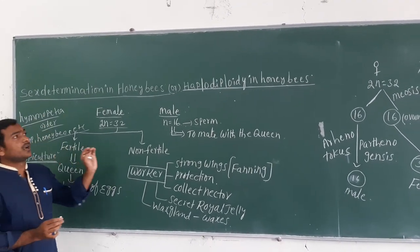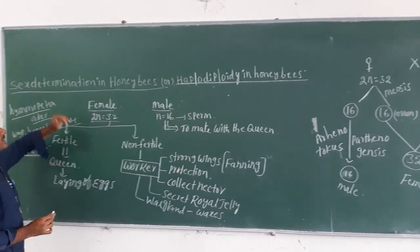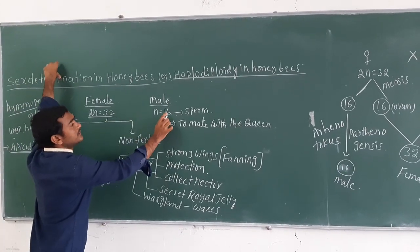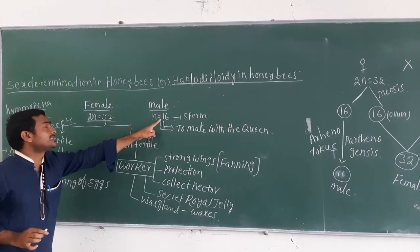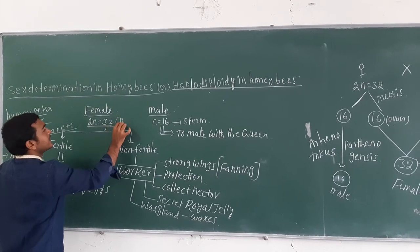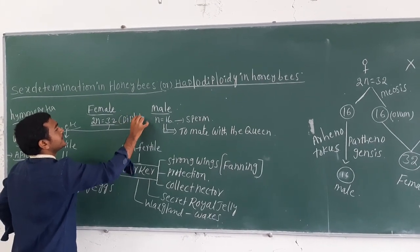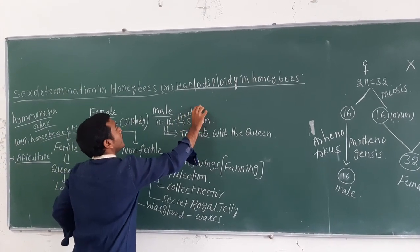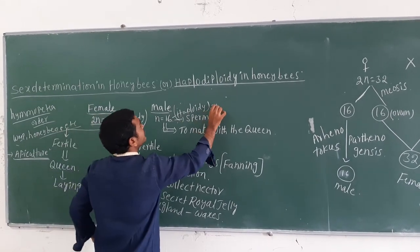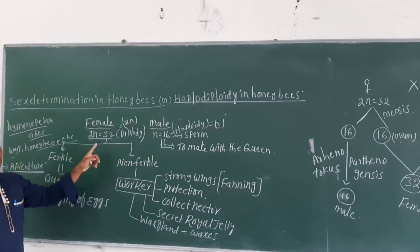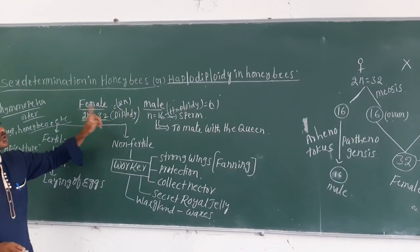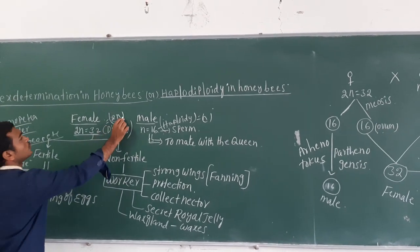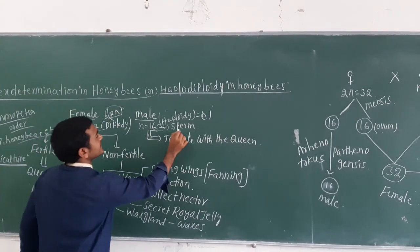Why is it called haplodiploidy? The female has 32 chromosomes (2N, diploid), and the male has 16 chromosomes (N, haploid). The male's 16 is half of the female's 32 — so 16 doubled equals 32, making the female diploid and the male haploid.